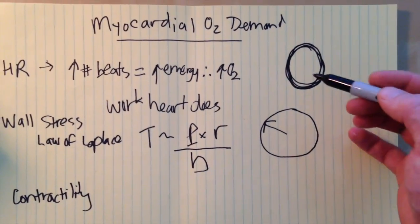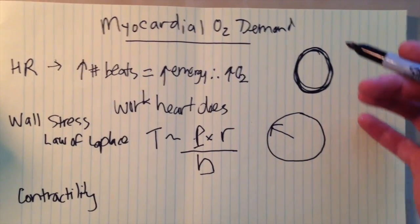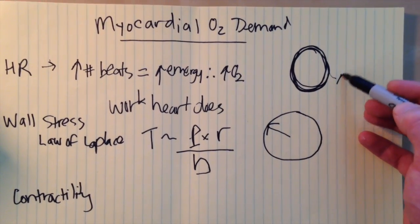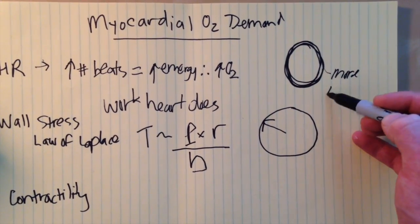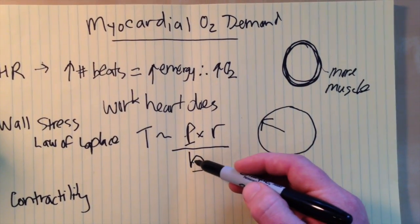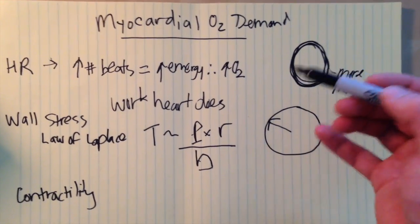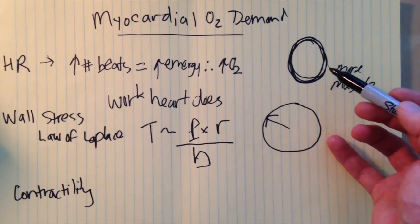This one can go either way because you could also say that the net oxygen demand or oxygen consumption is going to be higher in here because there's more muscle. So this one can sometimes be a bit of a wash but by the definition of the law of Laplace, a thicker walled ventricle is going to have less wall stress per unit thickness.